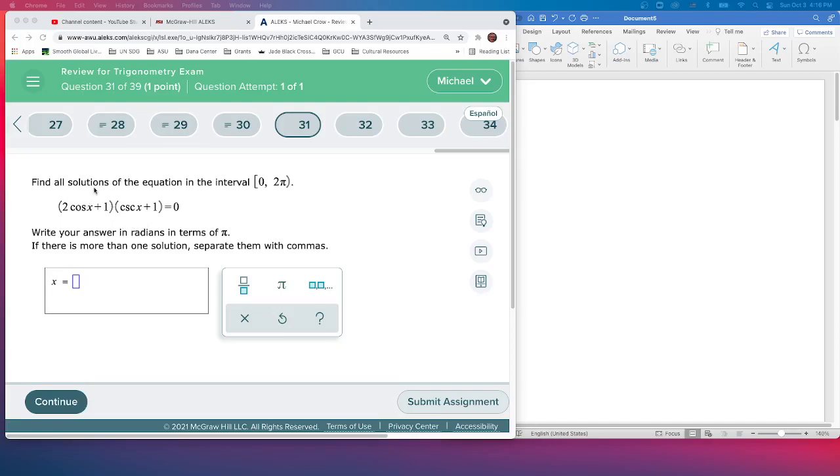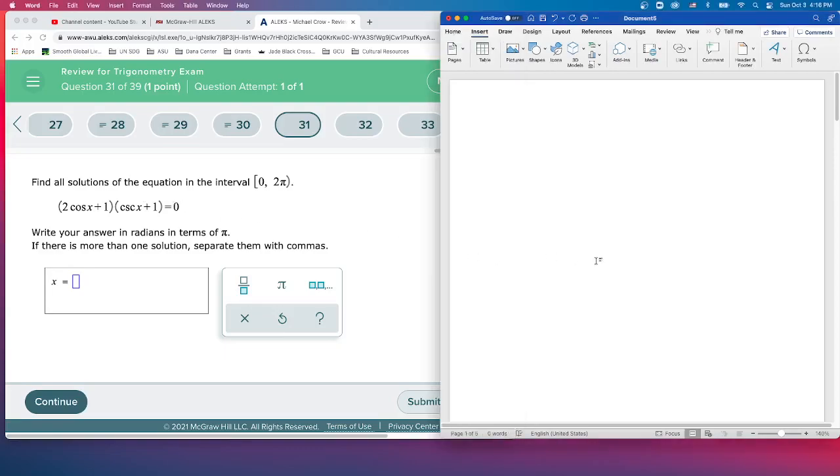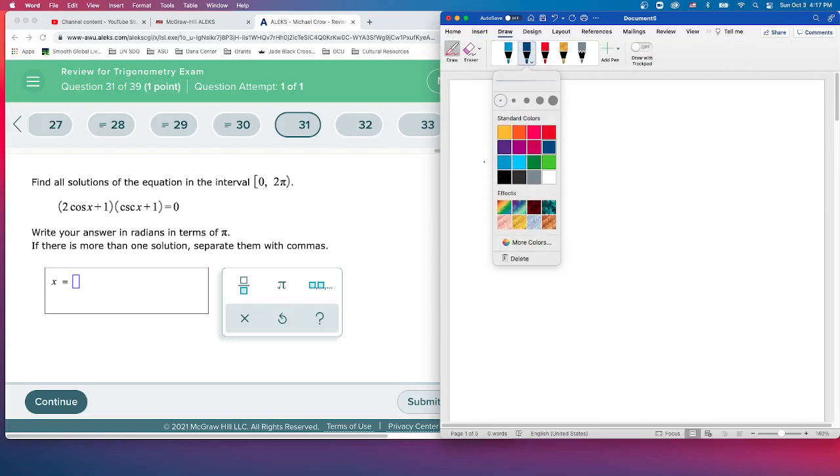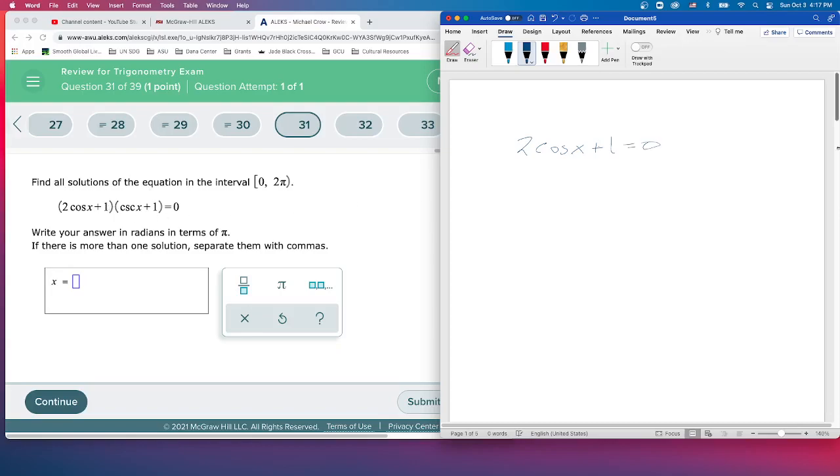This is like A times B. We've got two things multiplied that give us 0. What that means is each of them could be 0. The only way you can multiply and get 0 is if one of the factors is 0. So we're going to find that either 2cosine(x) + 1 = 0, or cosecant(x) + 1 = 0.